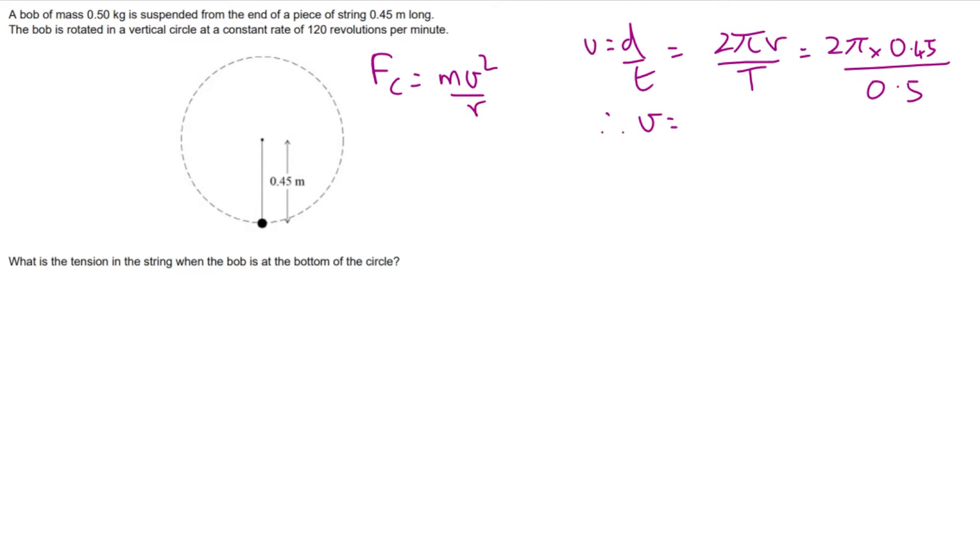This gives us a velocity equal to 5.65 meters per second. We can now substitute that back into the centripetal force formula: 0.5 for the mass times 5.65 squared for the velocity over the radius of 0.45 meters.